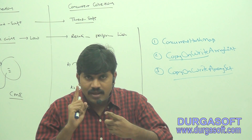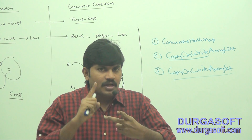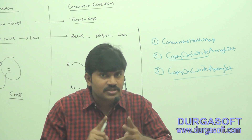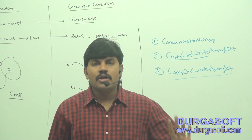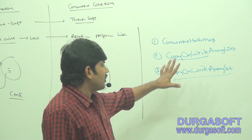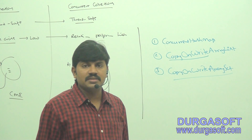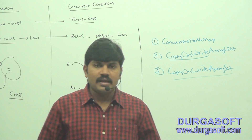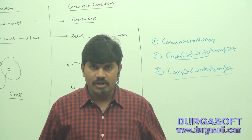The three important concurrent collection classes are: first, ConcurrentHashMap; second, CopyOnWriteArrayList; and third, CopyOnWriteArraySet. These are the three classes we have to discuss in detail with respect to programs.